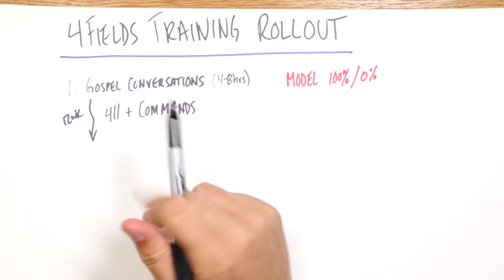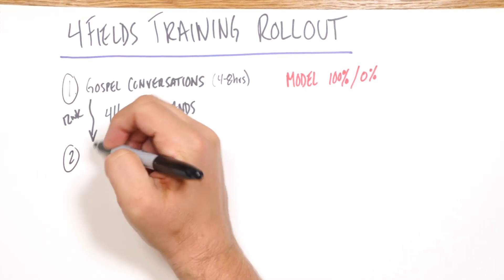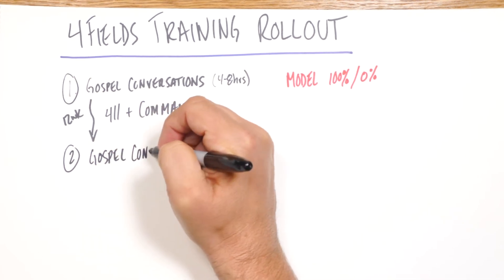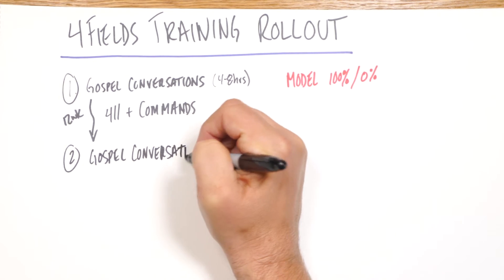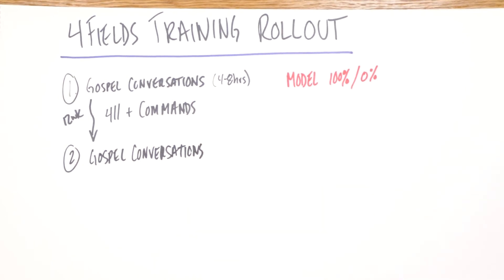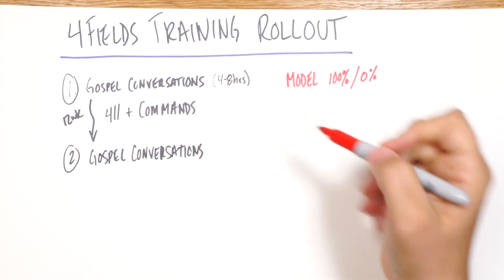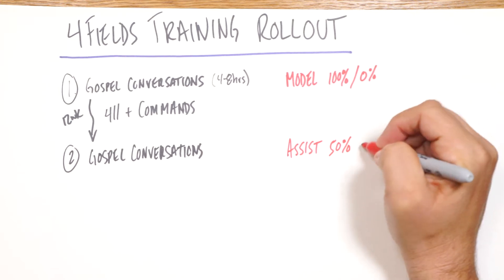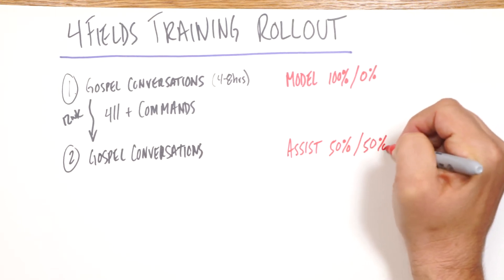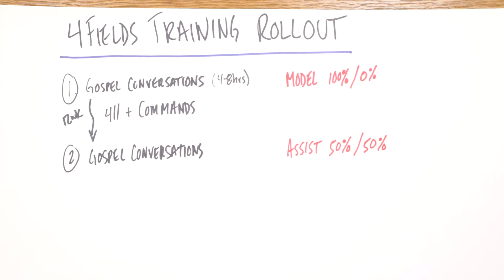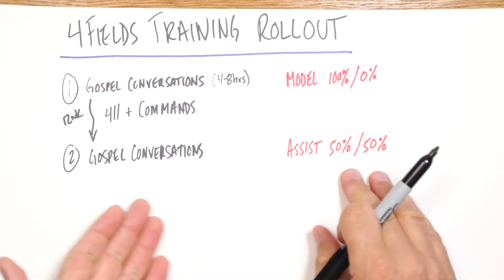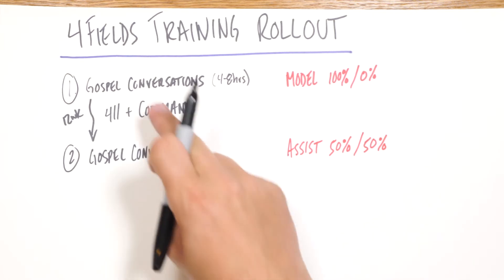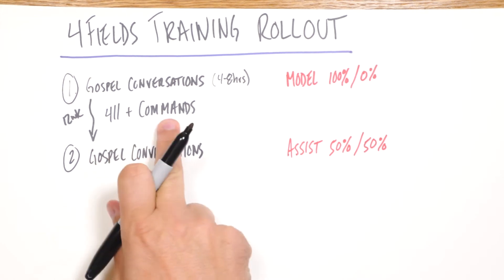And then the second, again, we come back and we do another round of gospel conversations training, an event. But this time, we will assist. So the outside trainers will be half or less of the training, and the locals will do half or more of the training, just trying to hand over as much authority and responsibility to the locals as possible. And the key people to help with this training would be the ones who actually did the weekly rollout here afterwards.